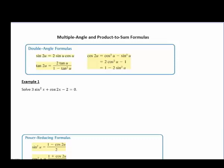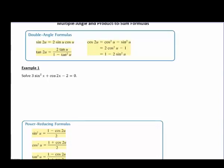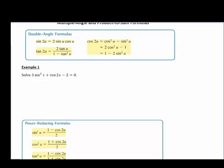Let's take a look at our multiple angle and product to sum formulas. The first formula we're going to look at is the double angle formula. Anytime we have twice an angle, we can use one of these formulas. Notice that cosine actually has three that you can choose from, so you want to see which one best fits the situation.